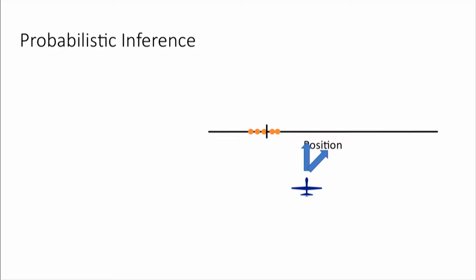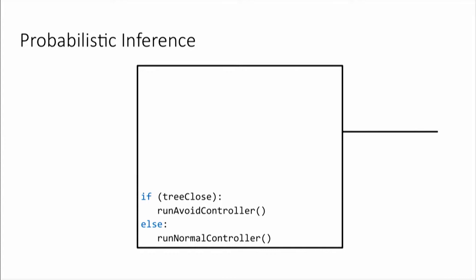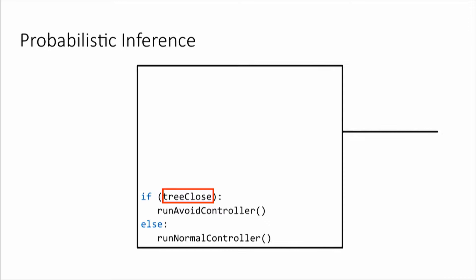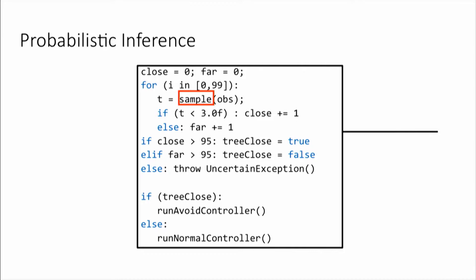The code I want to write looks something like: if I'm close to the tree, avoid it; otherwise, continue on your path. In the probabilistic programming community, we have answers for how to write code to determine whether the tree is close or not. Given these data points, we can sample potential positions of the tree. Based on those samples, which help quantify the uncertainty about where the tree is, we can make this decision about whether to press on or to avoid it.